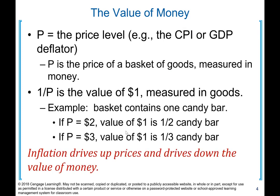Let's look at the value of money. P is the price level — for example, CPI or GDP deflator — so P is the price of a basket of goods measured in money. 1 over P is the value of $1 measured in goods. For example, if the basket contains one candy bar and price equals $2, the value of $1 is half a candy bar. If the price of candy is $3, the value of $1 is one-third of a candy bar. Inflation drives up prices and drives down the value of money.